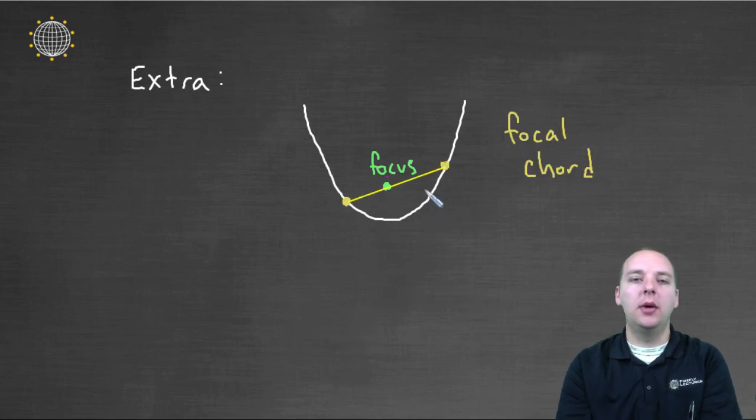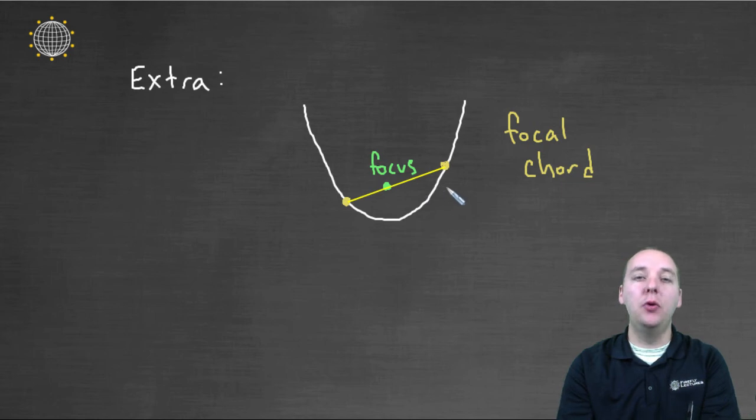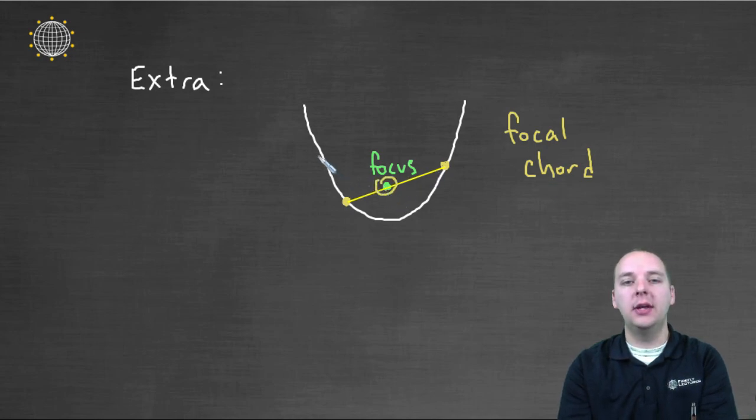Occasionally you'll be asked about a focal chord. A chord is just any line segment that touches both sides of the parabola. And a focal chord will be a chord that specifically goes through the focus. So you can have different focal chords. Like all of these in fact would be focal chords.